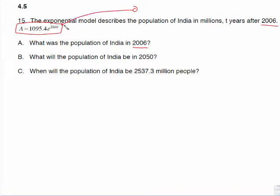If you put zero in for t, that's 0.014 times zero gives me zero right here. e to the zeroth is 1, and 1,095 times 1 is 1,095. Now that's the explanation.